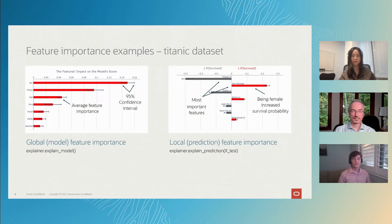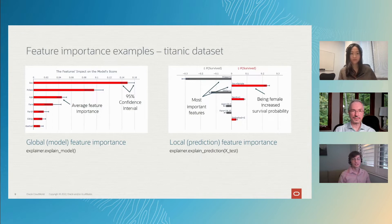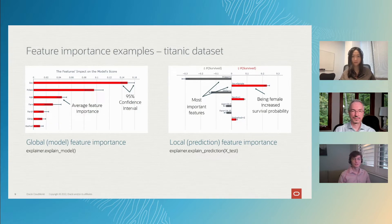In this case, we can see that sex is the single most important feature for the Titanic dataset. The interpretation is that if the model didn't have sex in the dataset, the accuracy would decrease by about 15%.